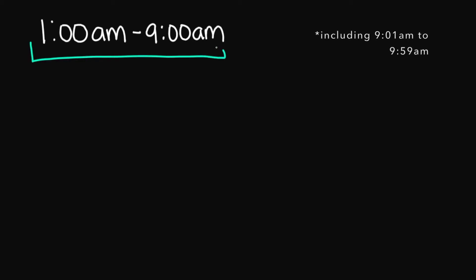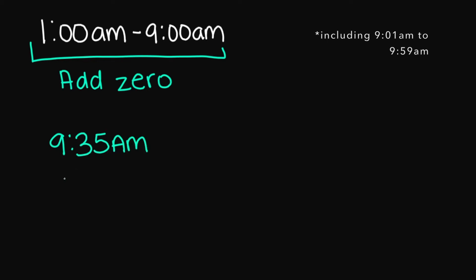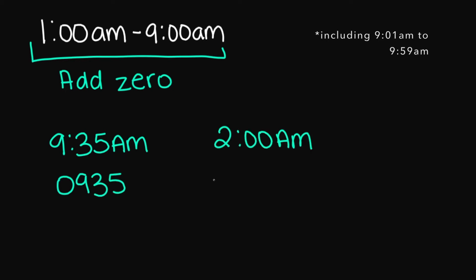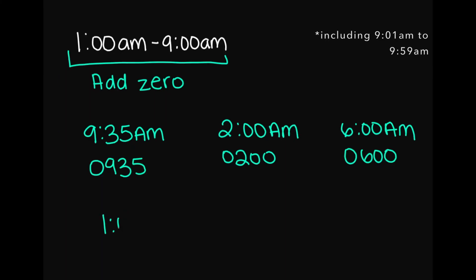So let's look at the morning for an example. For times between 1 a.m. to 9 a.m., if you are going to convert into military time, all you have to do is add a 0 right in front of the hour number. For example, if you have 9:35 a.m., military time is going to be 0935. If you have 2 a.m., military time is going to be 0200. 6 a.m. is 0600, and 1 a.m. is 0100.